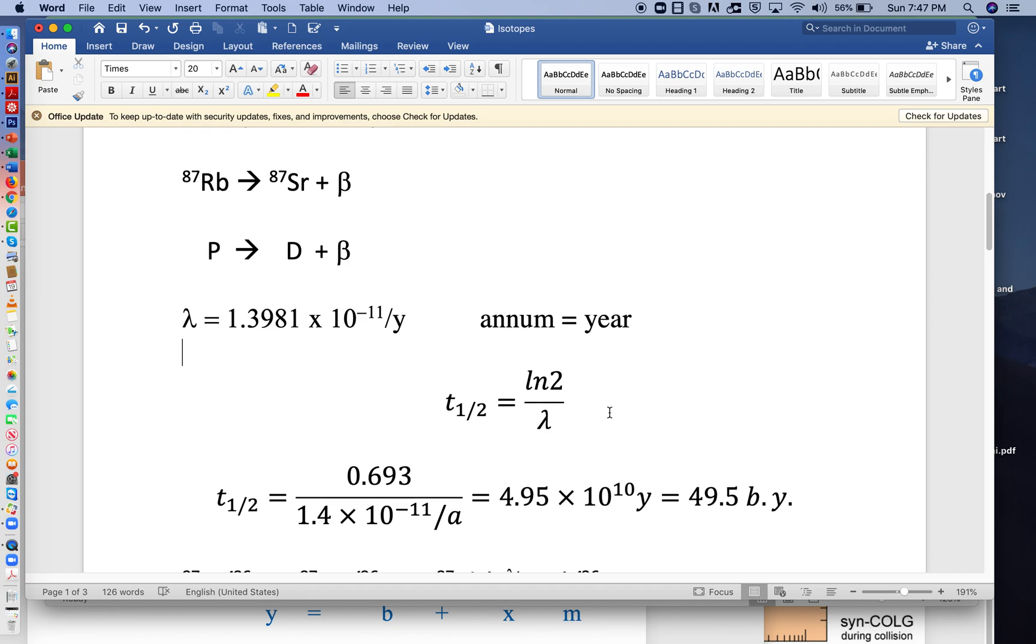You're probably more familiar with half-life than the decay constant, and they're related. For half-life, you take the natural log of 2, which is 0.693, and divide by the decay constant. Rounding to 1.4 times 10 to the minus 11 per year, that ratio gives us 4.95 times 10 to the 10, or 49.5 billion years.